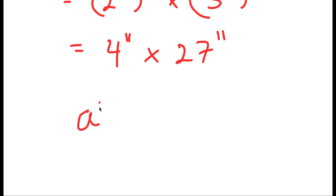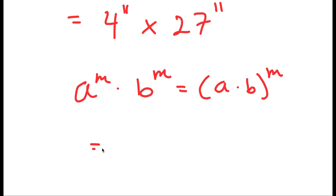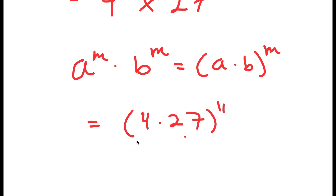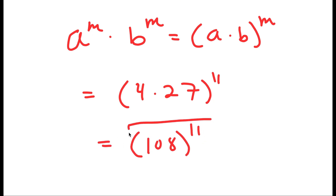And now, if I have something in the form a to the power of m times b to the power of m, this is equal to a times b to the power of m. So this turns into 4 times 27 to the power of 11, which is equal to 108 to the power of 11. So this is my answer.